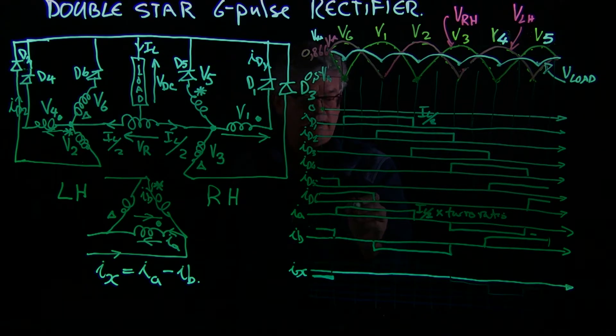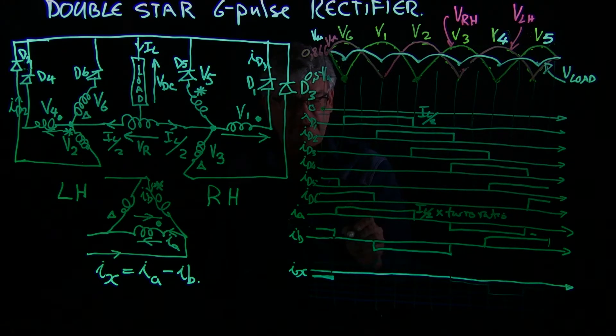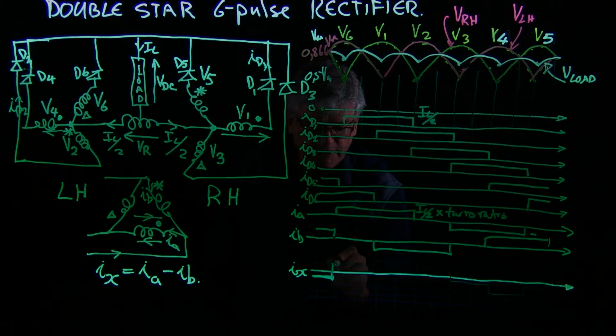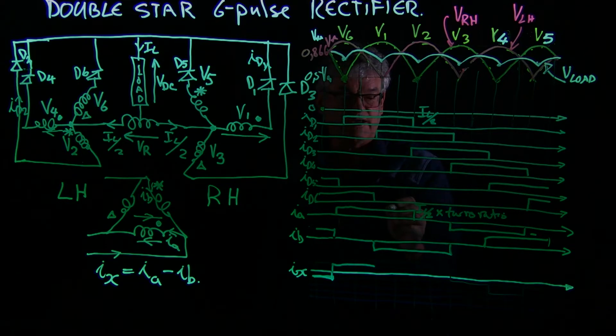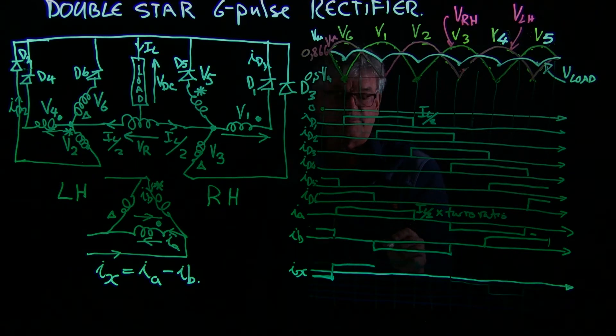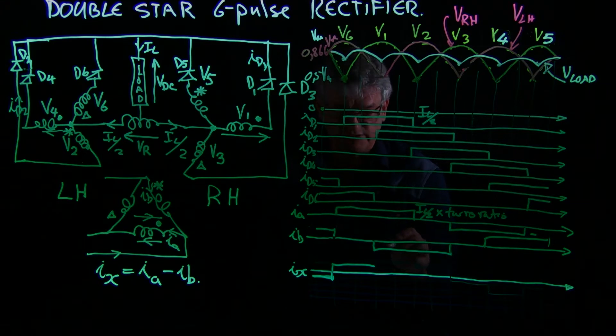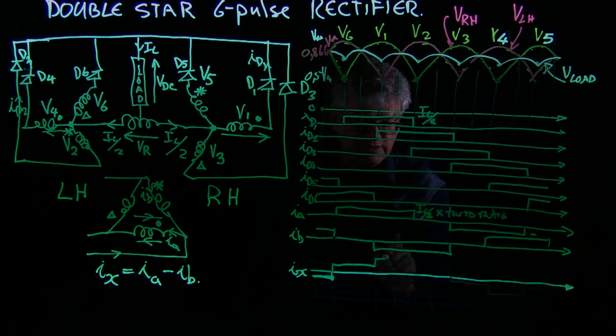And then here we have IL over 2 minus 0, so it will be the positive of that same value up to there, and here we have IL over 2 times the turns ratio minus minus IL over 2 times the turns ratio, which will give us 2 times that.